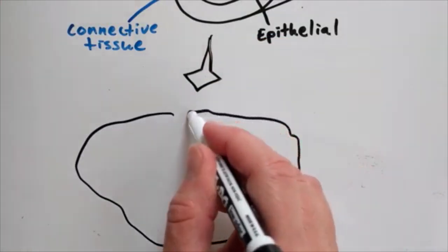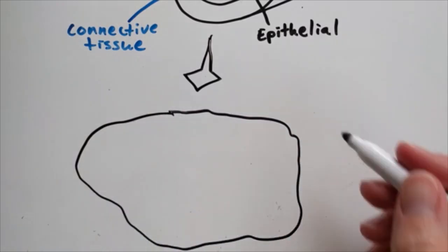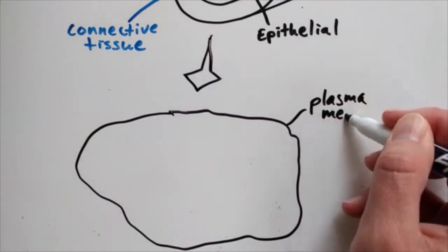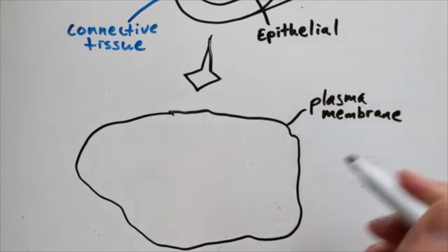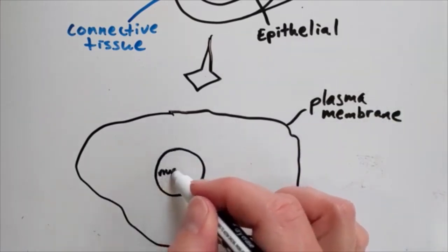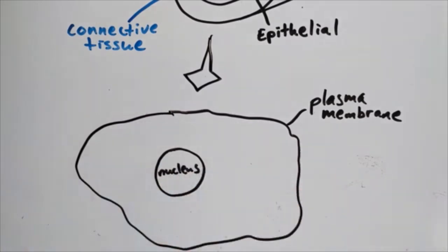Let's take a closer look inside one of these fibroblast cells in the connective tissue. Cells have a plasma membrane that surrounds the cell and acts as a selective barrier. The nucleus contains the DNA, which gives instructions for making proteins, which do most of the work in a cell.